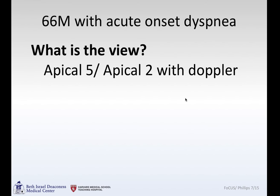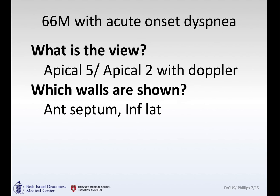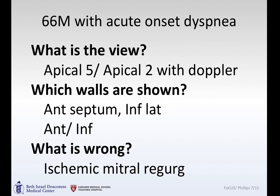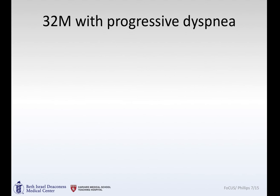The view is apical five and apical two-chamber with color Doppler. Walls shown: anterior septum and inferior lateral in the apical five; anterior and inferior in the apical two. Given the hint of wall motion abnormalities in the inferior wall and tethering of the mitral valve, this turned out to be ischemic mitral regurgitation.